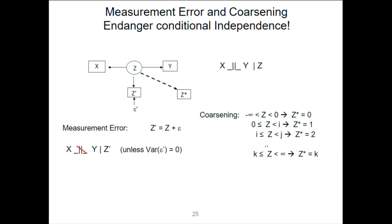There's an important difference here: Z-prime is really measuring Z with error, whereas Z-star is not measuring Z with error — Z-star is a perfect measure, but it projects Z onto a coarser scale with fewer categories than the underlying Z. The sad fact is that almost always, unless I'm incredibly lucky, when I condition on Z-star, X and Y are still going to look dependent. So in both cases — measuring with error and measuring by coarsening — I lose conditional independence, which is the cornerstone of all this work.